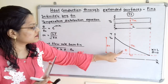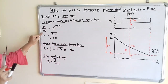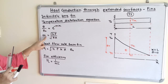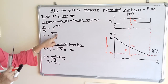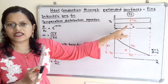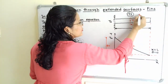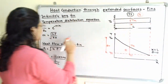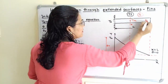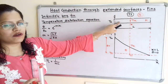The temperature distribution equation is: theta / theta_O = e raised to minus Mx. Here M = sqrt(HP / KA), where H is the convective heat transfer coefficient, P is the perimeter of the fin, K is the thermal conductivity of the fin material, and A is the cross-sectional area of the fin.